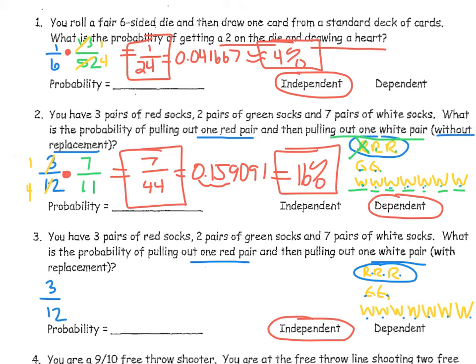For the second event, we're putting that pair of socks back in, so nothing gets crossed out. The probability of pulling out a white pair is 7 white pairs out of 12 total — still 12 because nothing changed. Notice both denominators are 12 because the second event was not affected by the first, which is another reason these are independent events. Multiplying and simplifying: 3/12 simplifies to 1/4; then 1/4 times 7/12 equals 7 out of 48.